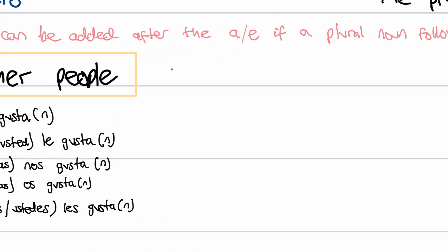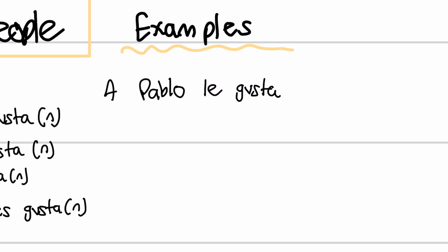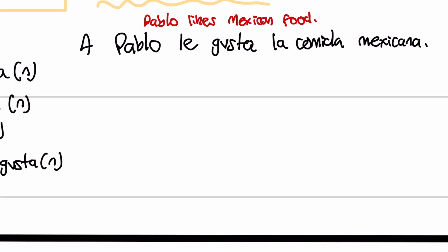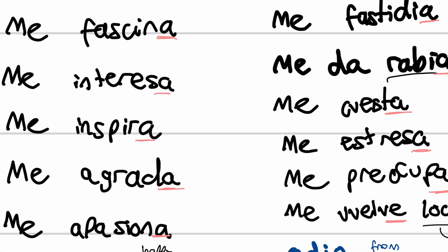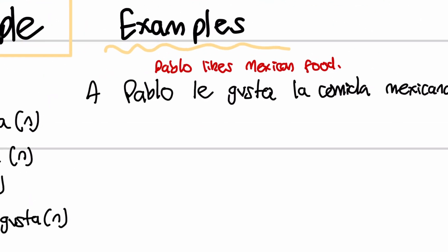Let's look at some examples. Our first example: a Pablo — Pablo being another character — le gusta. He likes. After gusta I need a noun or infinitive. I'm going to say la comida mexicana. So this would translate to: Pablo likes Mexican food. And this gusta can be swapped for pretty much any of these other verbs or synonyms — no gusta, me fastidia, me da rabia — it works mostly with any of these.